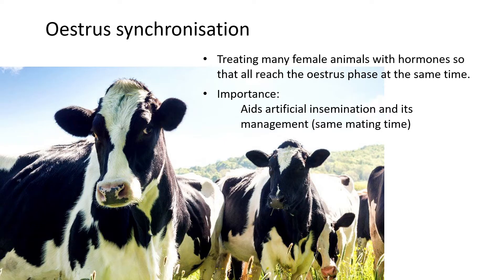The Graafian follicle stays in stasis — it stays the same way — until the hormones are taken away or a different hormone (an anti-hormone) is introduced to stimulate ovulation. This is to get all the animals to eventually reach oestrus all at the same time.